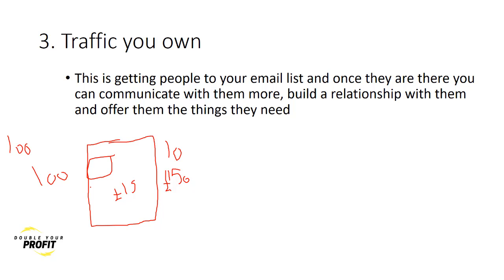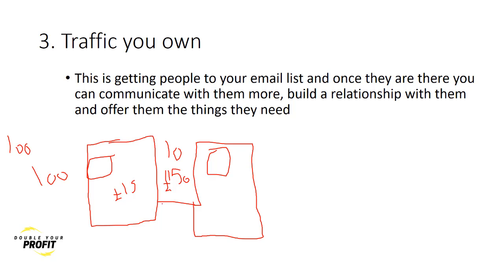So your profit is 50 pounds - if you're lucky. A lot of marketers stop here at this first product. But what elite marketers do is they have an upsell in place. Once people buy the front-end product, they give them another upsell - a different product that those 10 people need. Let's say out of the 10 people, three of them buy your upsell at maybe 97 pounds.